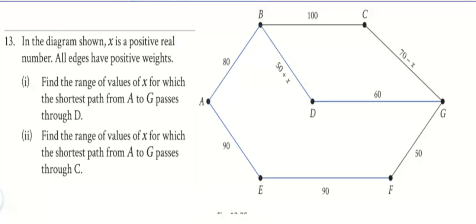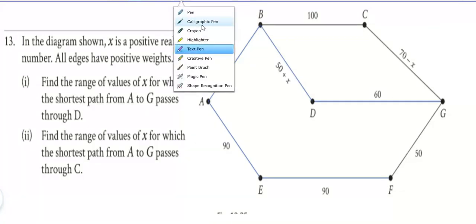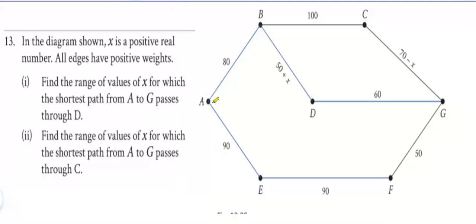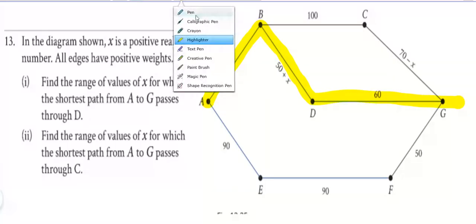We'll have a go through D first. Let's do this: A to B to D to G. Can we add all them up? So 80 plus 50 is 130, 130 plus 60 is 190 plus x for that route.